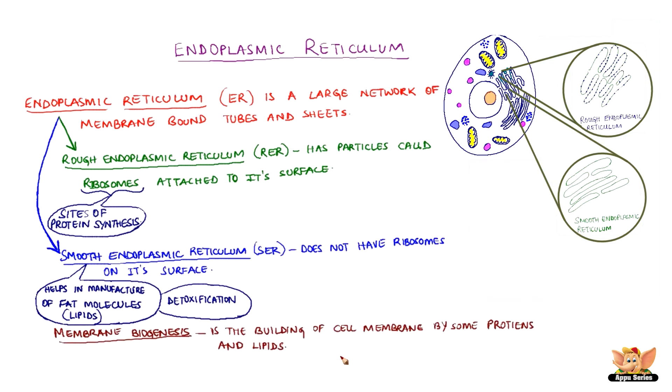The process of building the cell membrane by some proteins and lipids is called membrane biogenesis — the creation of the cell membrane.